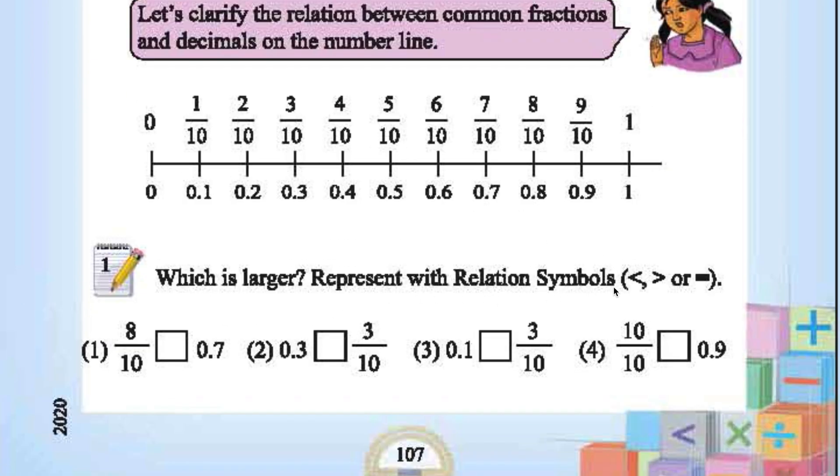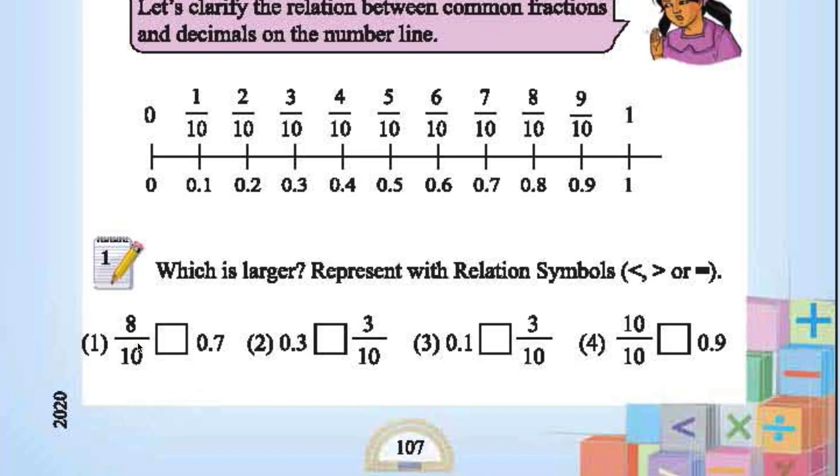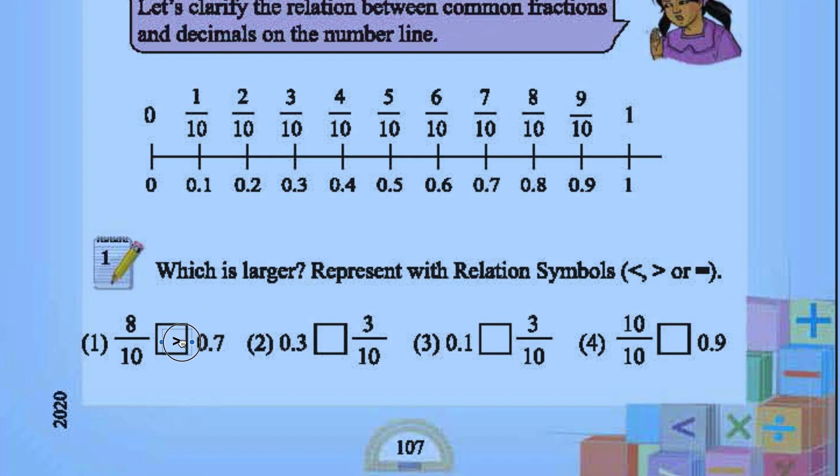Which is larger? Represent with relation symbol. 8 by 10 is nothing but 0.8, is larger than 0.7. You can refer the number line also if you wish. So 8 by 10 is greater than 0.7.